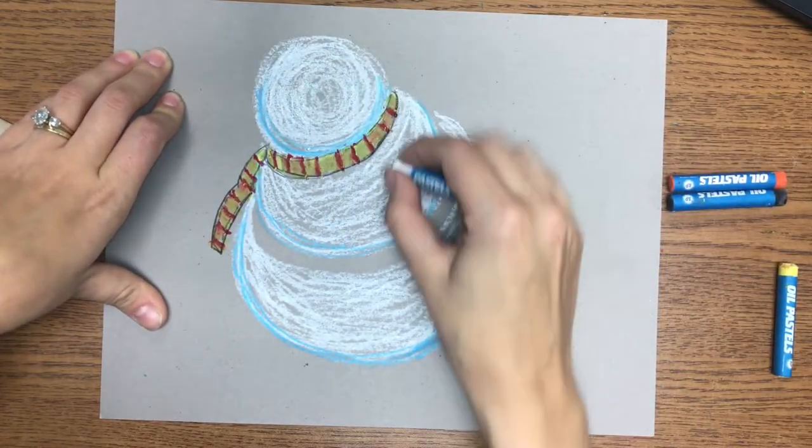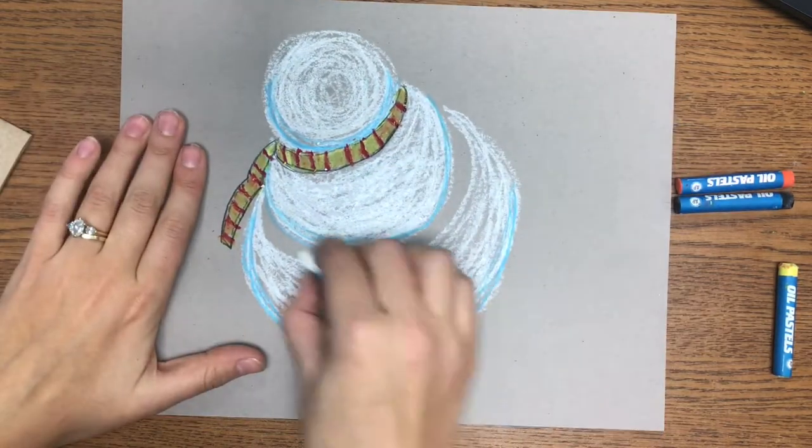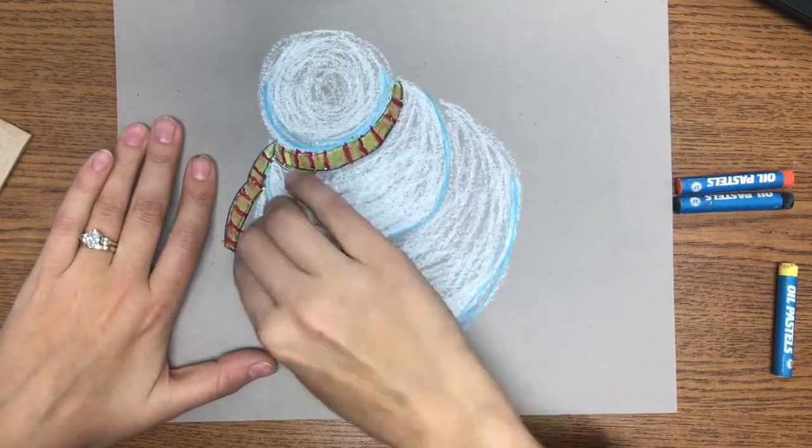Now here I'm stopping to do some touch-ups on my snowman. I'm going back in and filling in more of the white space. I'm filling in more of the yellow, making that look a little bit bolder and more vibrant.